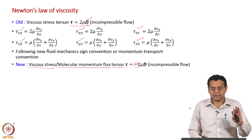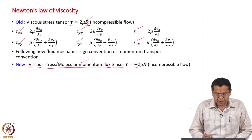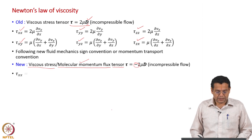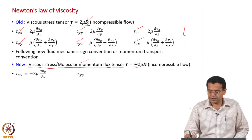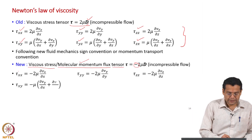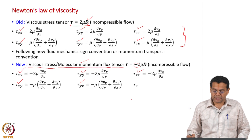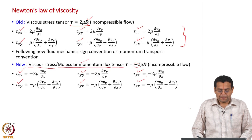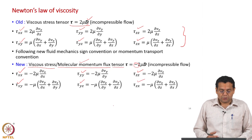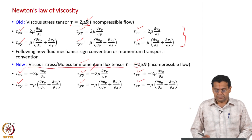So tau has two interpretations: one is viscous stress and the other is molecular momentum flux. In fluid mechanics it is always viscous stress, only the sign convention is different. In momentum transport it represents the molecular momentum flux. Now just rewrite the same set of six equations including a negative sign — no other change at all. The left-hand sides are the components of the viscous stress tensor, or if using the momentum transport convention, components of the molecular momentum flux tensor.